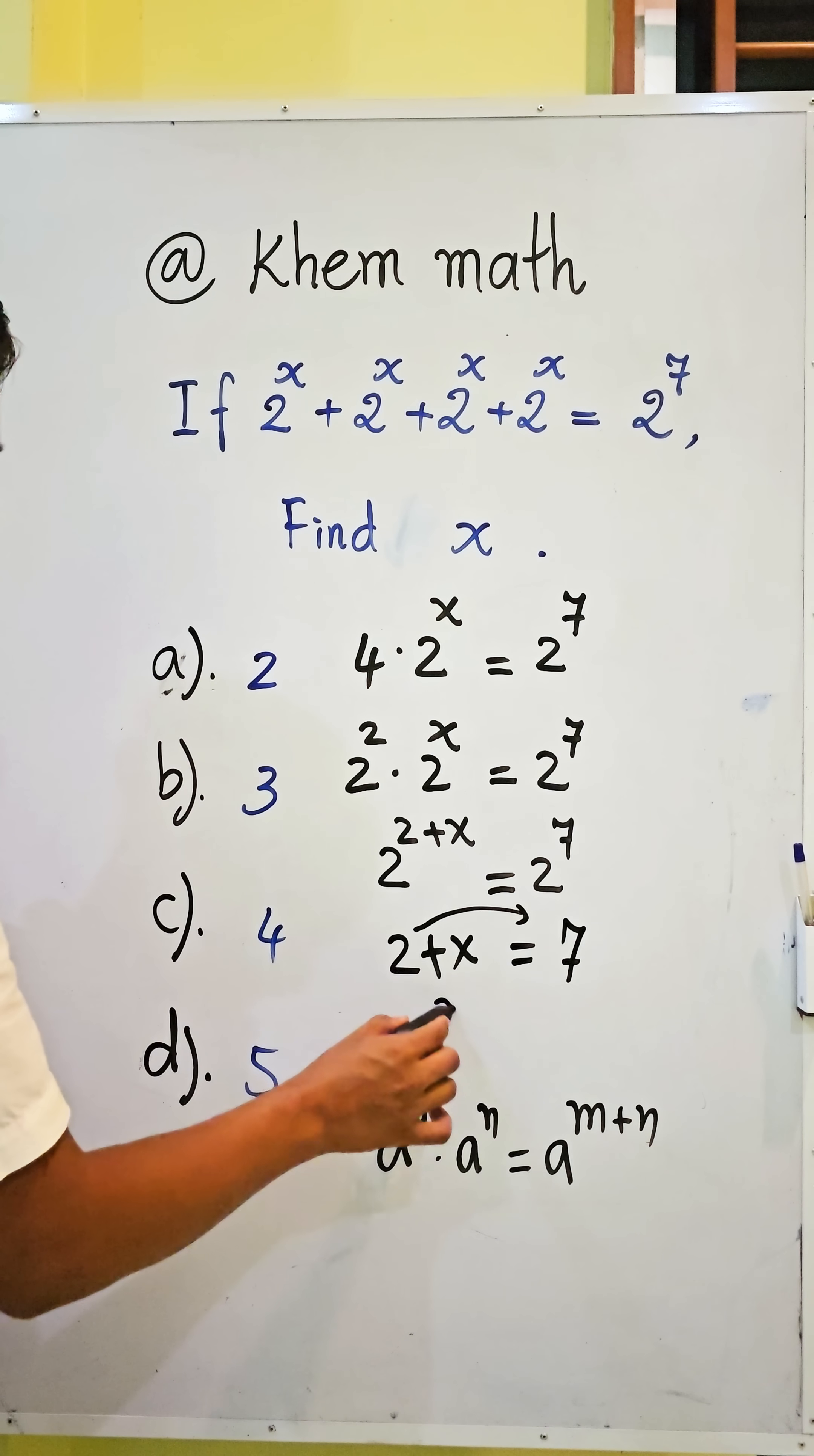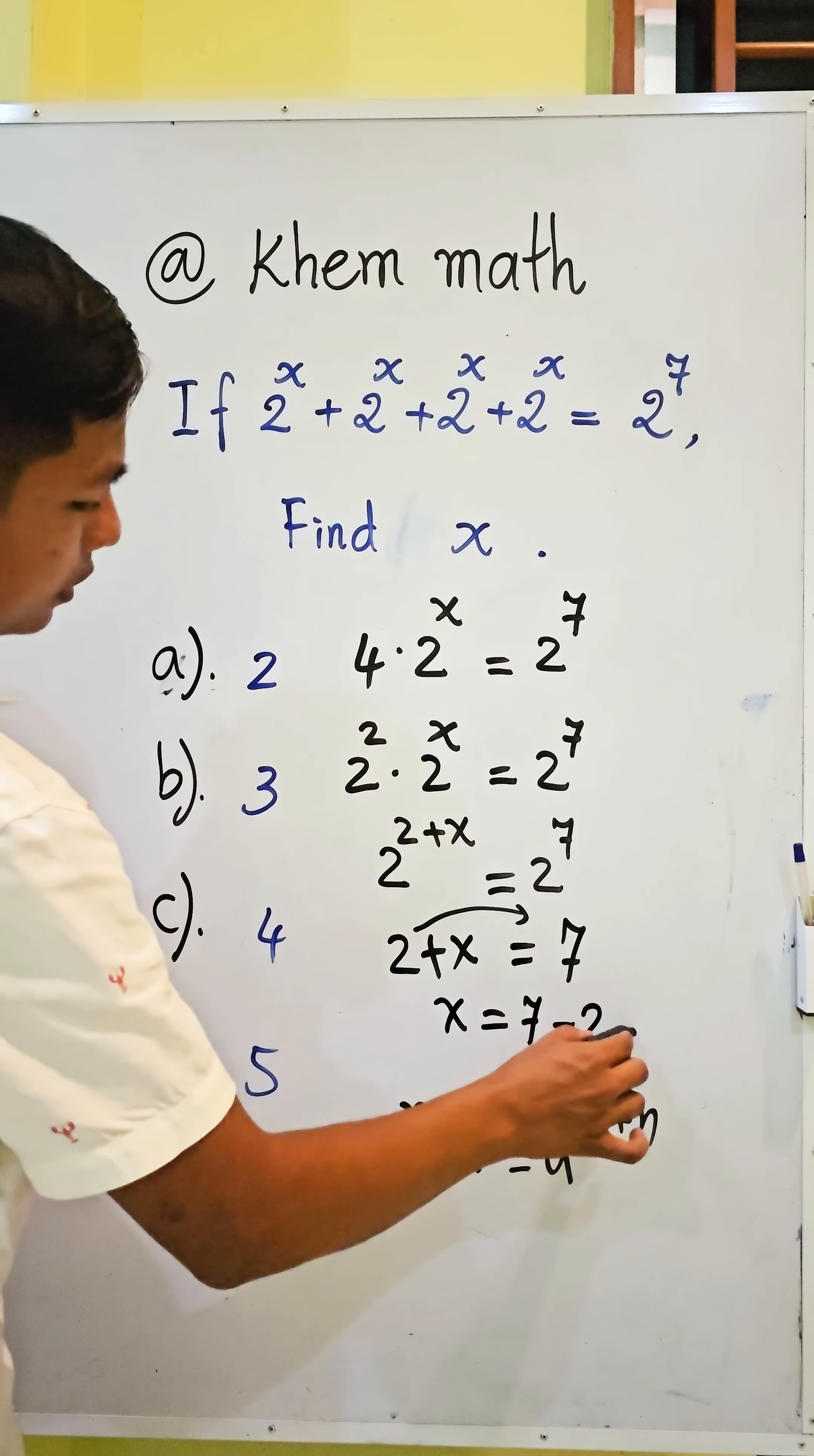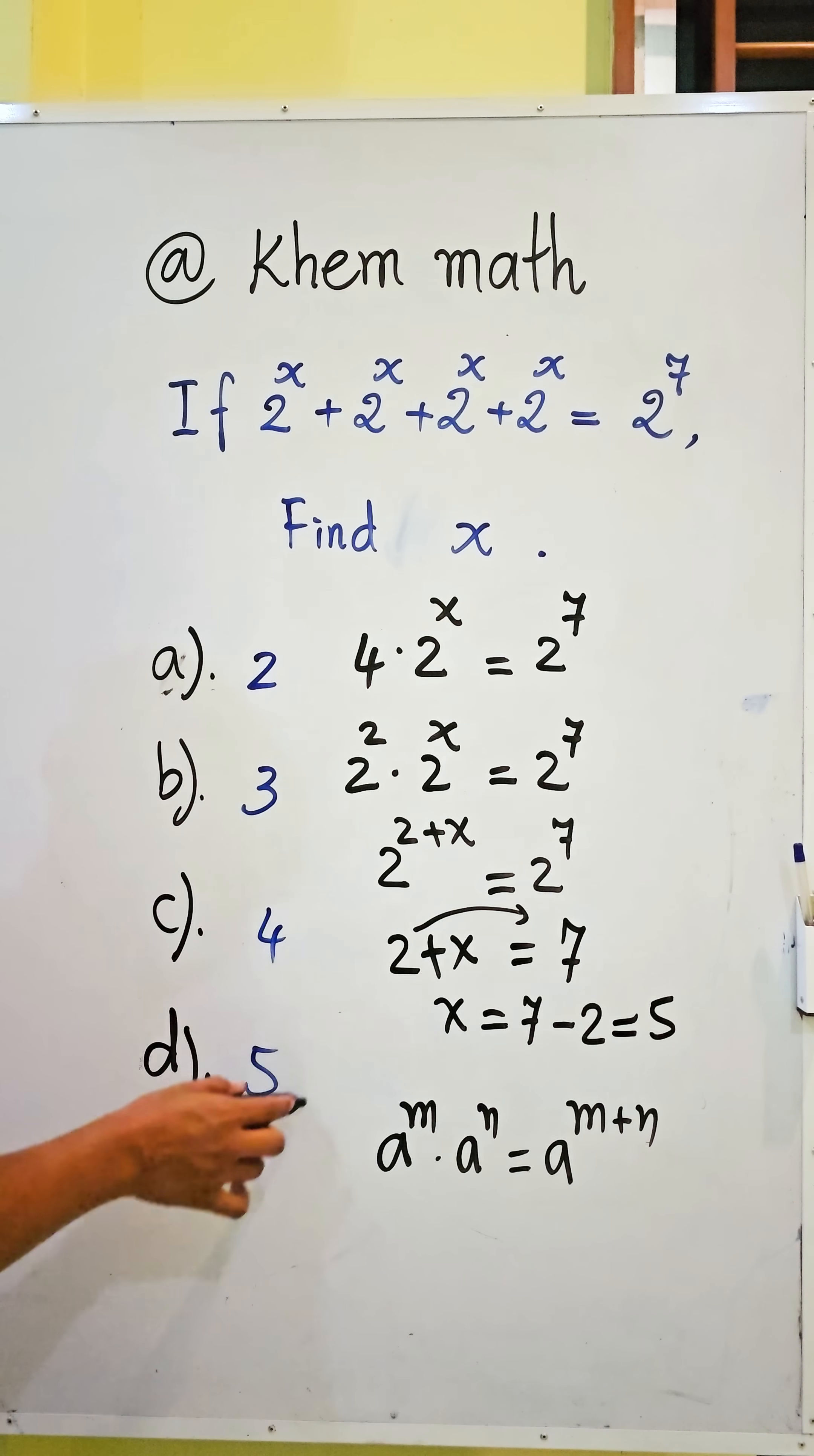So we change 2 to the right hand side. We get x equals 7 minus 2 and we get equal 5. So our answer is D.